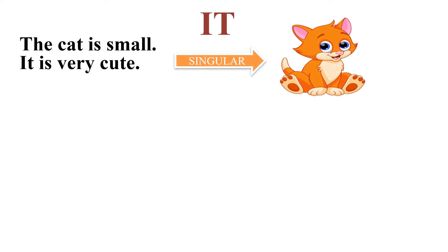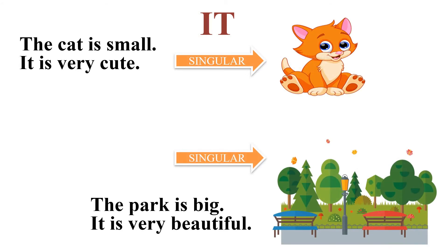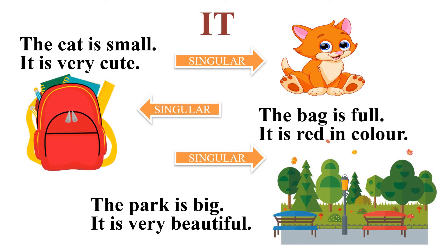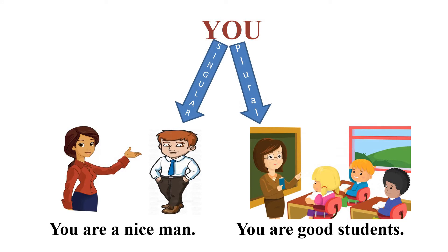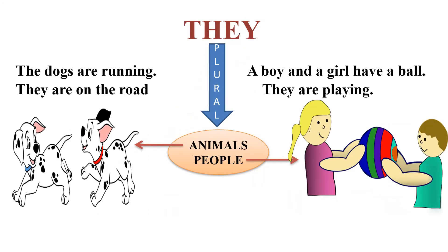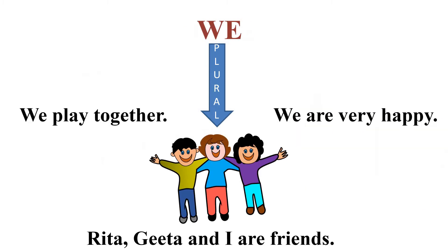We use 'it' with a singular animal, place, and thing without life. 'You' ka use hum singular and plural both person ke liye karate hain. 'They' and 'we' ka use hum plural noun ke saath karate hain, means more than one person.